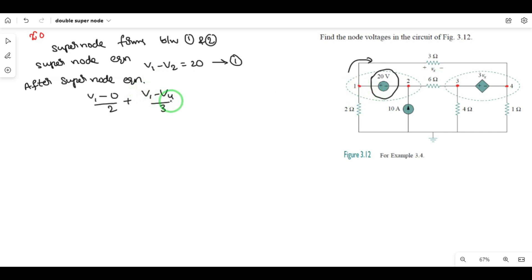Applying KCL to node 2: the 2 ohms source contributes V2 minus V3 by 6 ohms. The current source connected to the second node contributes plus 10 amps incoming. This is equation 2.